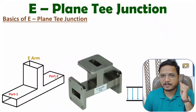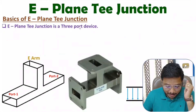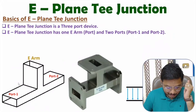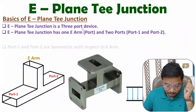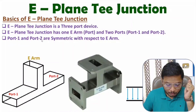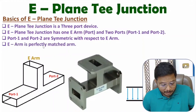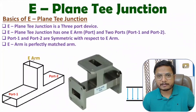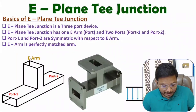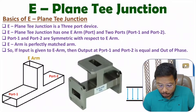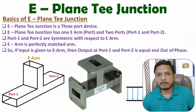That is how the basic working and structure is there. In E-Plane T, we have a three-port device with E-Arm as one port and two other ports. Port one and port two are symmetric with respect to E-Arm. The E-Arm is a perfectly matched arm, meaning reflection at that port is zero. So return loss at E-Arm is zero as it is a perfectly matched arm. If you give input at E-Arm, then output at port one and port two is equal and out of phase. That is how the basics are there.